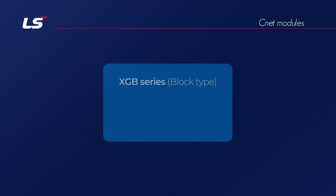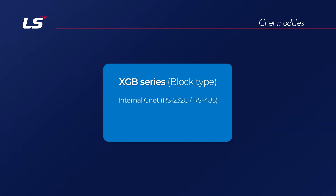In the XGB series, LS-Electric's small PLC has built-in CNET communication including RS-232C and RS-485. There are also additional modules such as XBL-C21A and XBL-C41A.